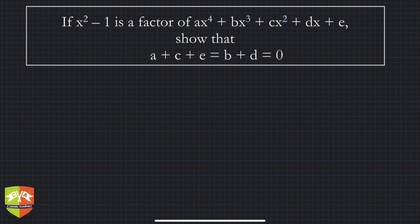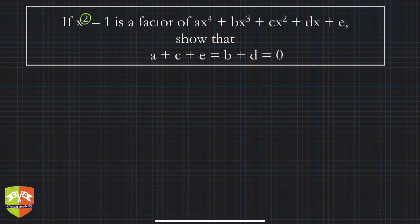Hello friends, welcome to another session on problem solving on factor theorem and remainder theorem. In this question, it's given that x² - 1 is a factor of ax⁴ + bx³ + cx² + dx + e. We have to show that a + c + e = b + d = 0.